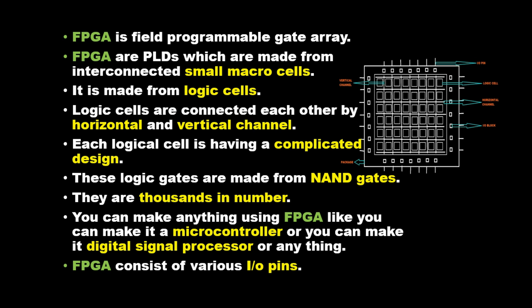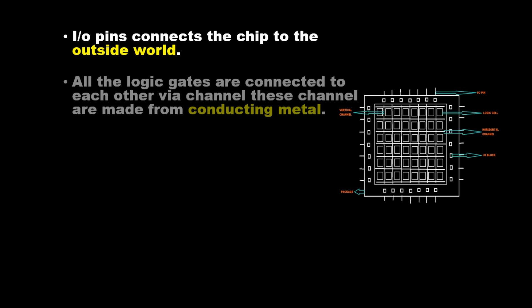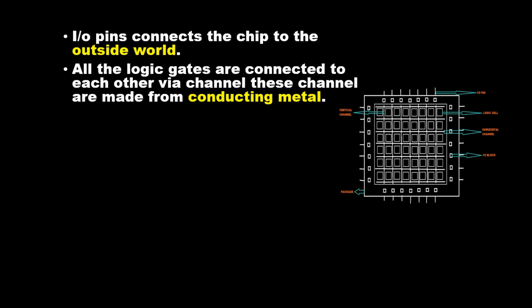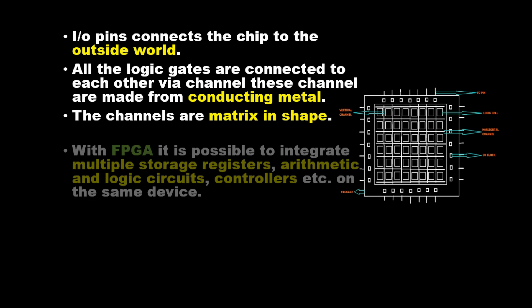FPGA consists of various IO pins. IO pins connect the chip to the outside world. All the logic gates are connected to each other via channels, which are made from conducting metal. The channels are matrix in shape.